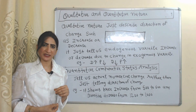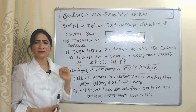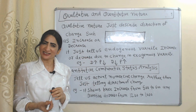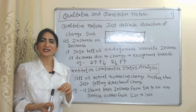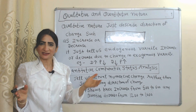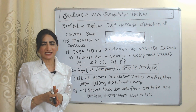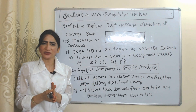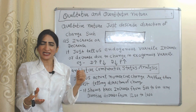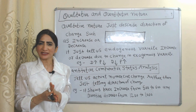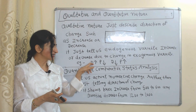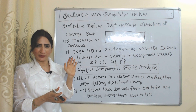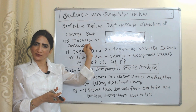Qualitative nature just tells us the direction of change, such as increase or decrease. It tells us whether the endogenous variable increases or decreases due to change in the exogenous variable — for example, demand increases due to a fall in price, or demand falls due to an increase in price.